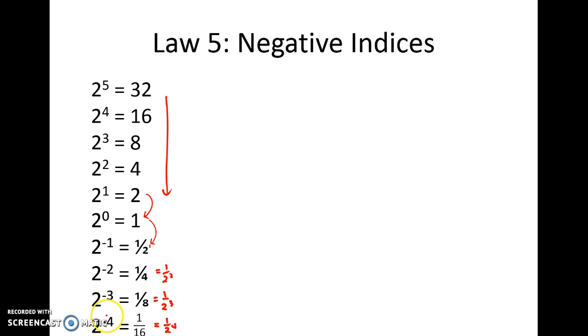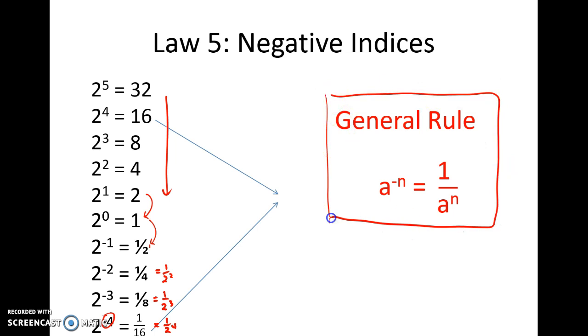So you'll notice that if we've got a negative indice here it can be written on the right hand side as a positive indice but only if we put it down in the denominator. So in general what we can say is that a to the negative n where we have a negative indice can be rewritten with a positive indice as long as we put it as the denominator. And so that is a general rule. I would suggest you stop the video here and copy it down.